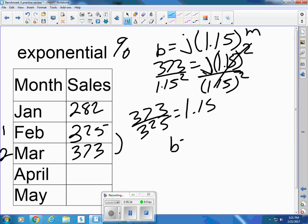So my equation is this. The number of boards equals 282 times 1.15, raised to the number of months.